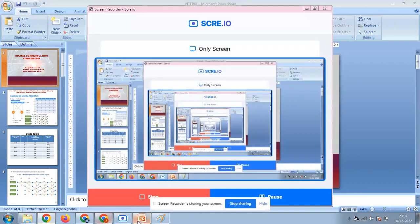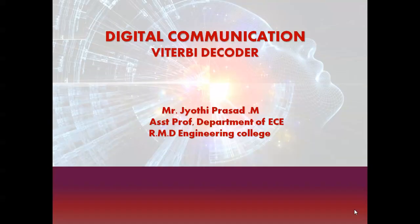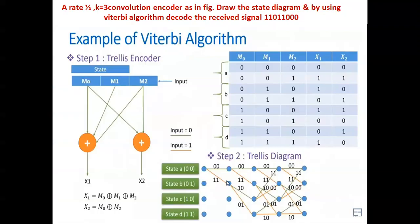Hi everyone, myself Jyothi Prasar from EC department, R&D Engineering College. Today we are going to discuss about the Viterbi decoder. In the usual problems they give a rate half and k equal to three, with a convolution encoder shown in a figure, and ask you to draw a state diagram and decode a received code word using the Viterbi decoder.